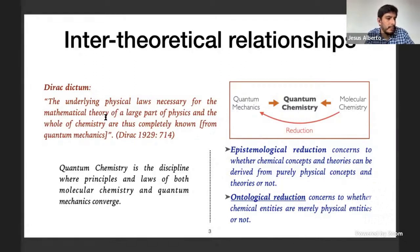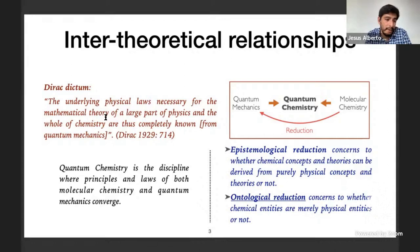This situation has led to the rise of a new discipline known as quantum chemistry, in which laws and principles of both molecular chemistry and quantum mechanics converge, making it the perfect scenario for the study of inter-theoretical relationships between these two disciplines. The debate on the reduction of chemistry to physics distinguishes between two aspects: epistemic reduction, which deals with whether chemical theories and concepts can be derived from purely physical theories, and ontological reduction, which has to do with whether chemical entities are ultimately mere physical entities or not. This project deals with ontological reduction.